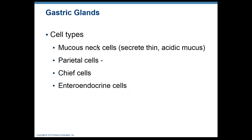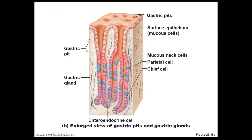The next cells — the dark pink cells — are also mucus-producing cells, but their mucus is thin and acidic, differing somewhat from the surface cells.